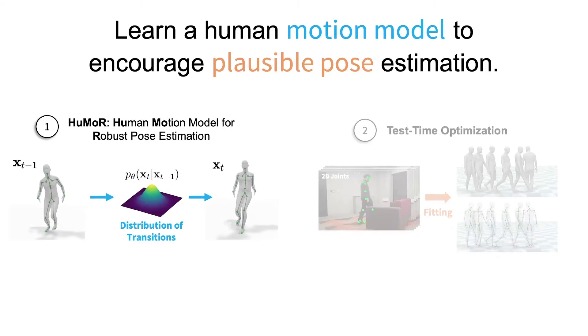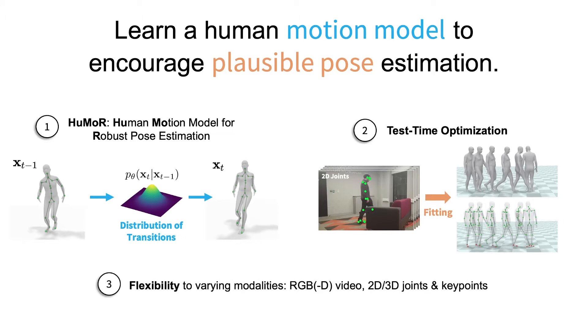The first is humor, a motion model that learns the dynamics of 3D human motion, which is used as a prior in a test time optimization to estimate plausible pose and shape from multiple modalities.